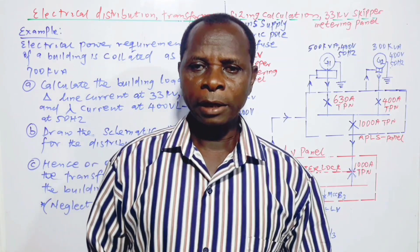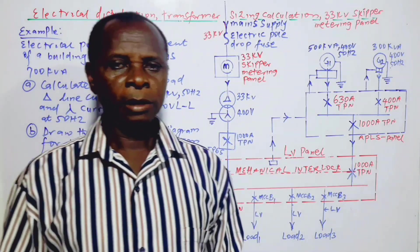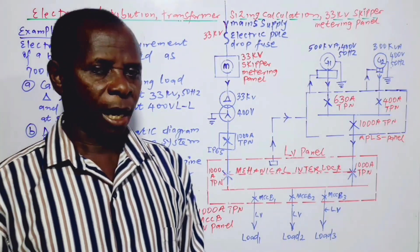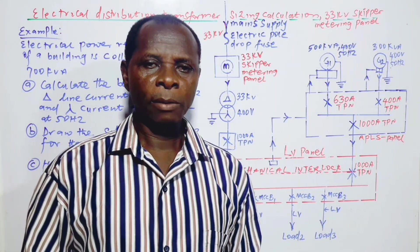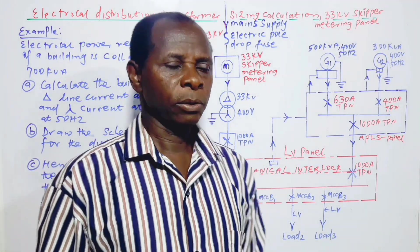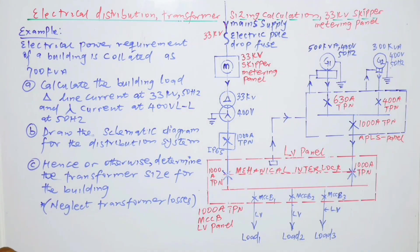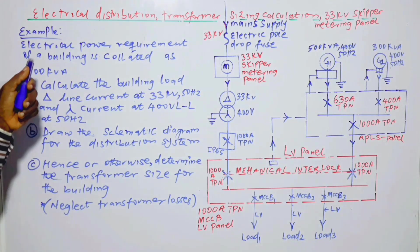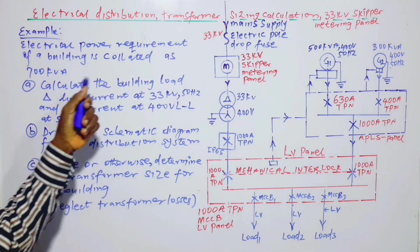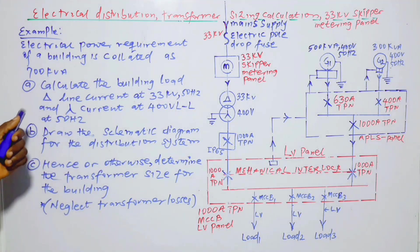For proper understanding, as well as thorough understanding of the concept, it is always better to make use of an example. Please continue to watch the video as I go through the example. And the example is: the electrical power requirement of a building is codated as 700 kVA.